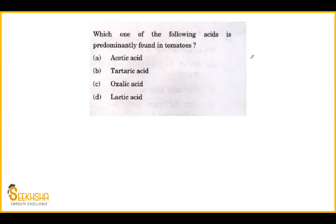Next question — we had previously discussed a similar question. Now you are asked: which acid do you get in tomato? Options: acetic acid, tartaric acid, oxalic acid, or lactic acid. This is the same table I showed you before — I'll show you it again. As I said, you can be asked about any element from any acid in that table.